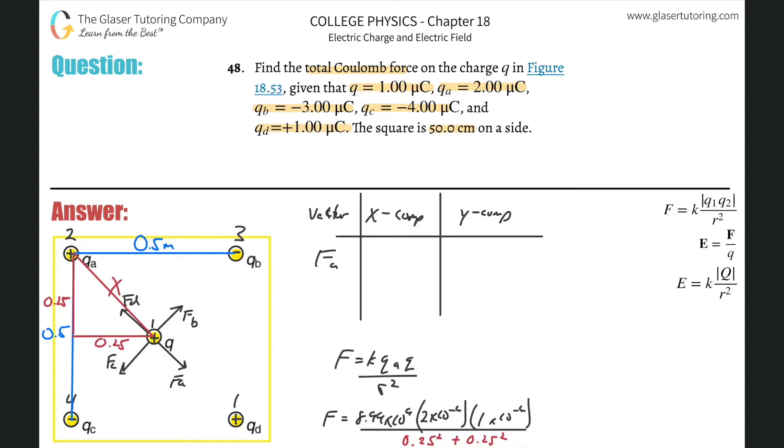So this is going to be 0.25 squared plus 0.25 squared. I know some of you might be saying, what about the square root? How did you do that? Again, check out number 47 and just calculate it. This is not going to be the resultant vector or the hypotenuse there. This is going to be the square of that hypotenuse. Check it out for yourself. So here we go. 8.99 times 10 to the ninth, multiply by 2 times 10 to the minus 6, multiply by 1 times 10 to the minus 6, all divided by then 0.25 squared plus 0.25 squared.